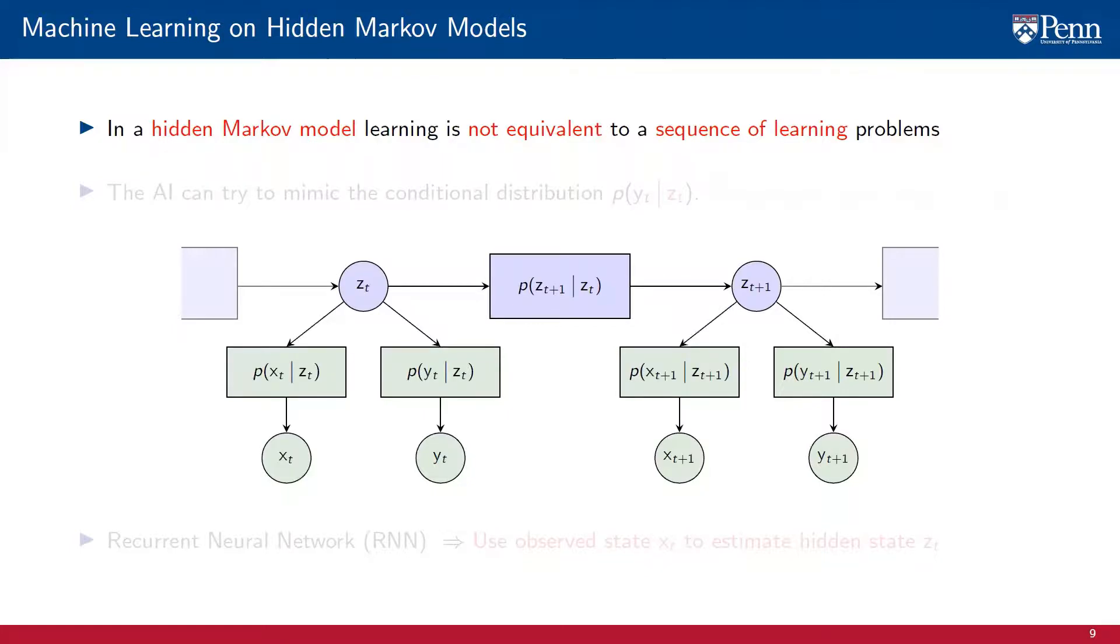The probability distribution of the observable state xt is also completely determined if we observe zt, but this fact is not very important in this discussion. What matters most to us is that the observation yt is conditionally independent.